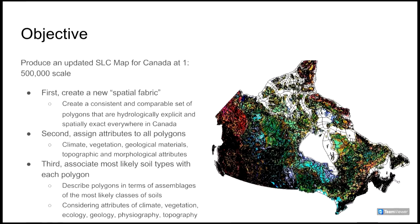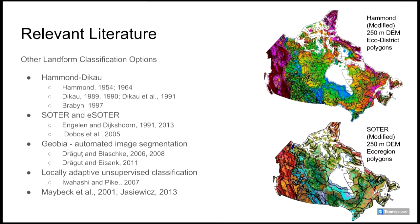Our primary objective was therefore to produce an updated SLC map for Canada at 1:500,000 scale. We decided to do this in three stages: first, create a new spatial fabric; second, assign environmental attributes to each polygon of the new spatial fabric; third, associate the most likely soil type or soil types with each new polygon.